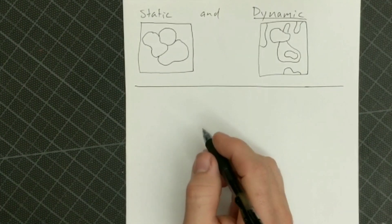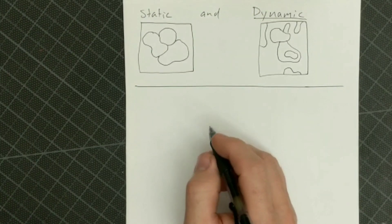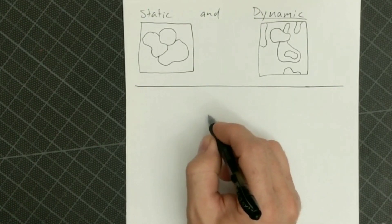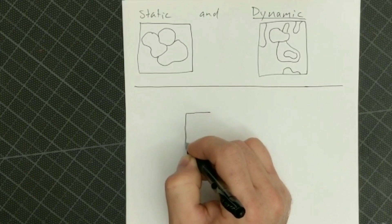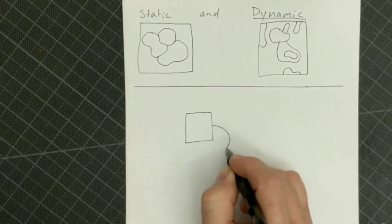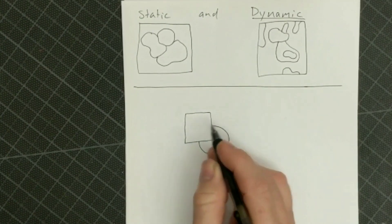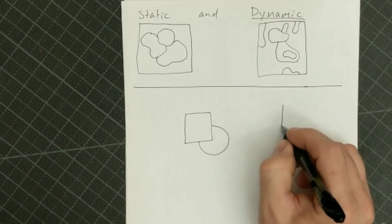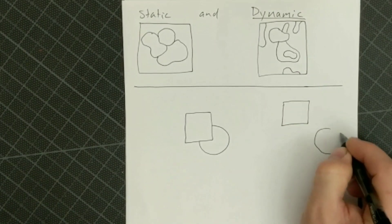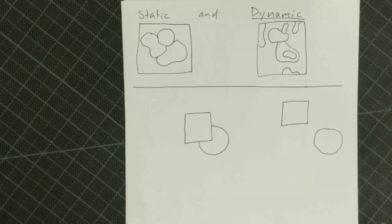So one good way to create dynamic imagery would be to overlap. So like if I had a square and I put a circle behind it, that's a little bit more dynamic than just having a square and a circle with no interaction with one another.